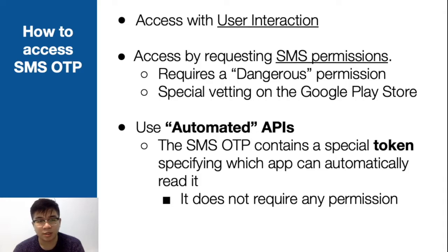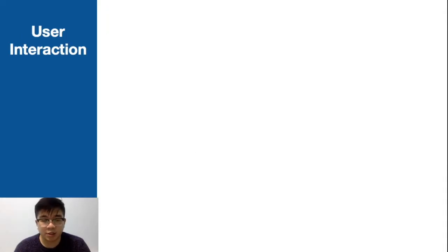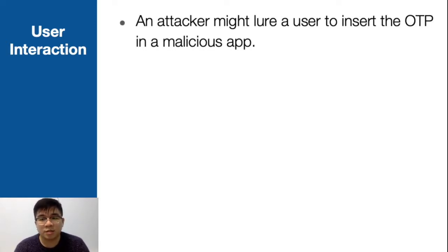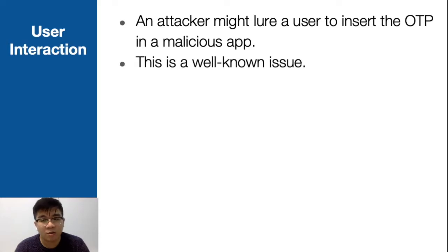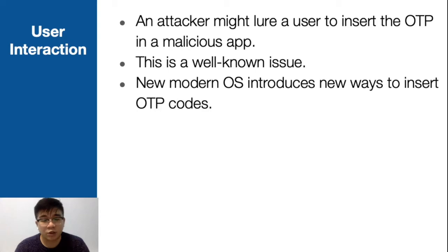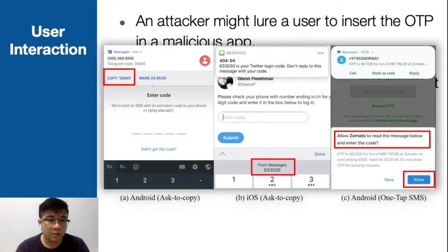Let's discuss user interactions. Apps try to ask the user to interact with the app to give one-time access for their SMS OTP. However, user interaction is subject to phishing attacks — users might be confused into inserting the OTP into a malicious app. So new Android and iOS versions introduced new ways to insert OTP codes, not only to ease people's lives but also to improve security. Other than the traditional copy and paste, iOS introduced an Autofill feature and Android has a one-tap SMS API feature, and with one click you give the app access to your SMS OTP.